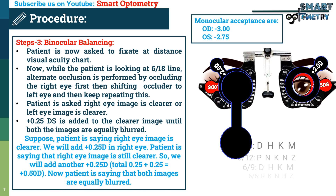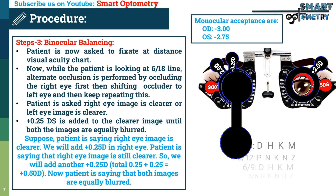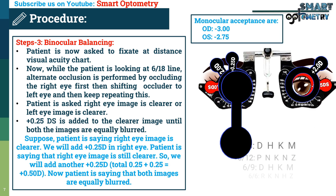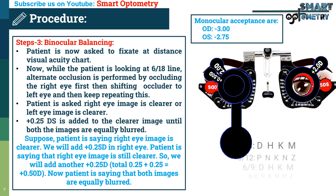Plus 0.25 diopter spherical is added to the clearer eye until both images are equally blurred. Suppose the patient says the right eye image is clearer. We add +0.25 D to the right eye; the patient still says right is clearer, so we add another +0.25 D, totaling +0.50 D in the right eye. Now the patient reports both eye images are equally blurred.